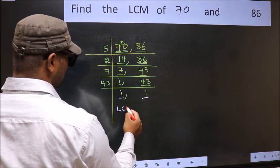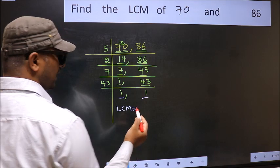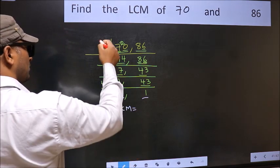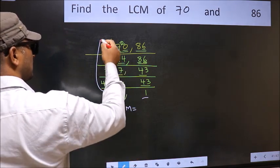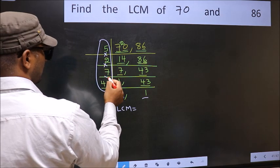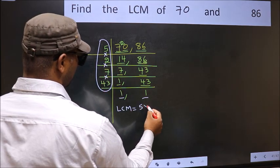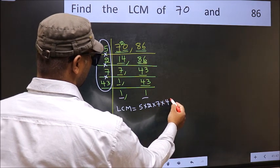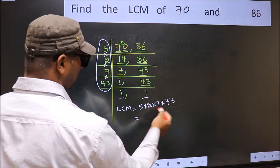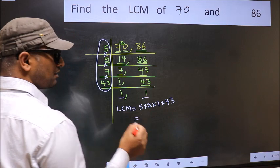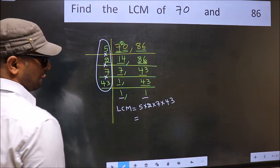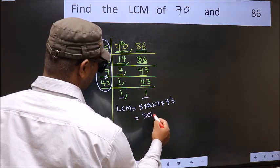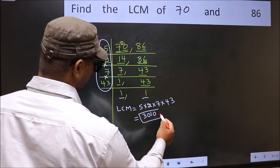So our LCM is the product of these numbers: 5 into 2 into 7 into 43. When we multiply these numbers, we get 3010 as our LCM.